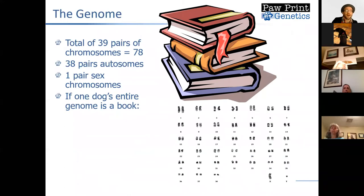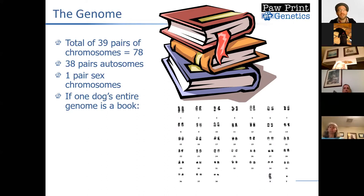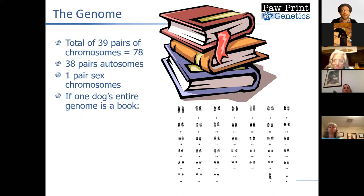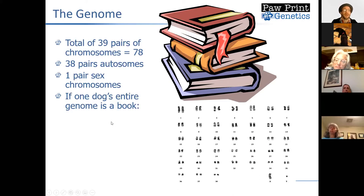When we look at the genome as a whole in dogs, we have 39 pairs of chromosomes — in humans it's 23 pairs. Chromosomes are sections of DNA that include genes. Each parent passes on one copy of each chromosome to every offspring. We have 38 pairs of what we call autosomes, which are chromosomes that do not dictate the sex of the dog, and then one pair of sex chromosomes, which help play a role in determining the sex or gender of the dog.